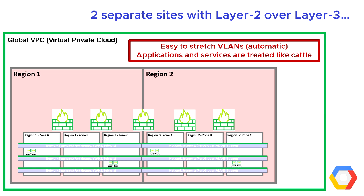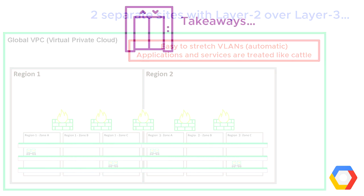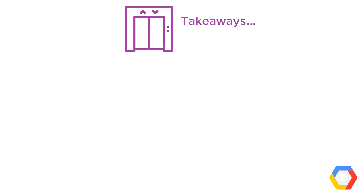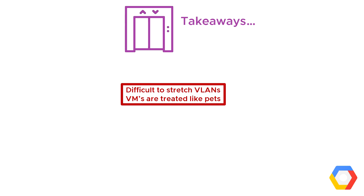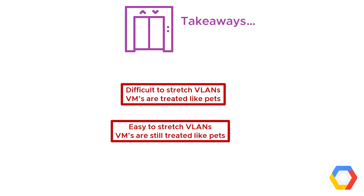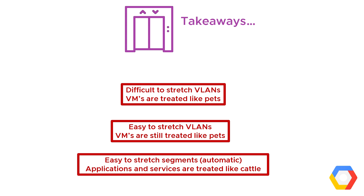We no longer have to create a single instance of a bulletproof application. Onto the takeaways: for a VMware administrator, they probably think about this existing environment where it's difficult to stretch VLANs and they treat virtual machines like pets, moving to a new model with VPCs where it's easy to stretch VLANs - but at this point, we're still somewhat treating VMs like pets in this hybrid world. Eventually, most VMware administrators and IT departments will get to the point where they realize it's so easy to stretch segments - and in many cases it's automatic - that they'll treat applications and services like cattle, distributing the application and its resilience across multiple zones and multiple regions by using a VPC.